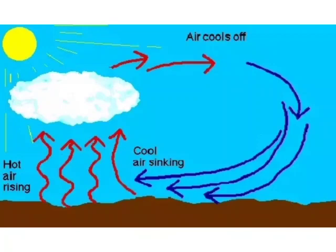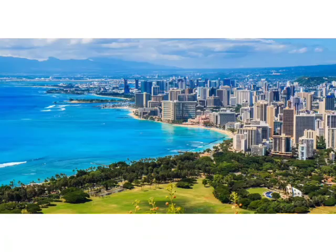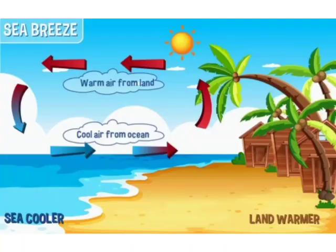This causes the wind to blow. In coastal areas, during the day, the land gets heated up more than the water in the sea. The air above the land is warmer. It rises up. Cool air from above the sea blows to take its place. This is called the sea breeze.